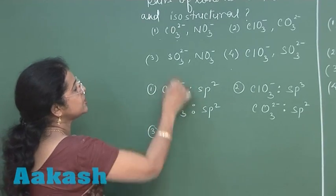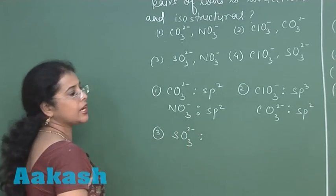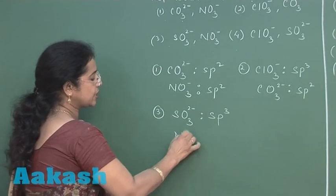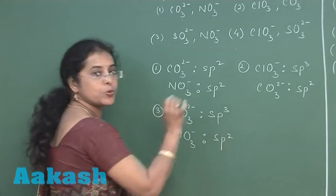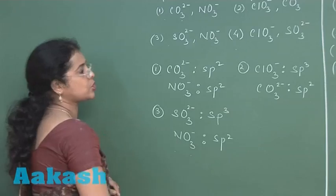Third case, this is sulfite ion. In sulfite ion hybrid state is sp3 while in case of nitrate ion hybrid state is sp2. So these two ions cannot be isostructural.